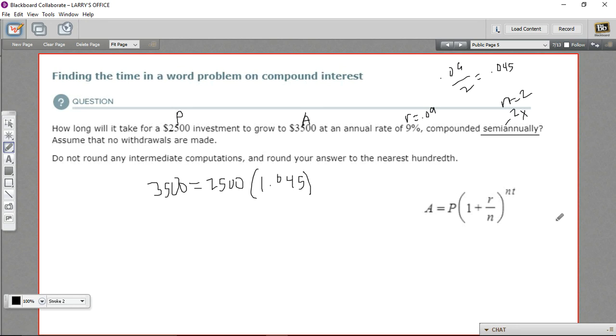And then we're going to raise that to the n times t power. n is two, t we don't know, that's what we're looking for. So raising that to the 2t power. So there is our formula and we want to solve this for t.